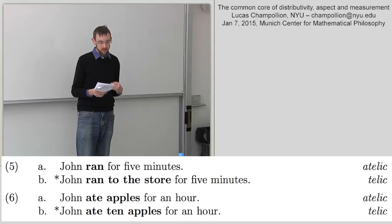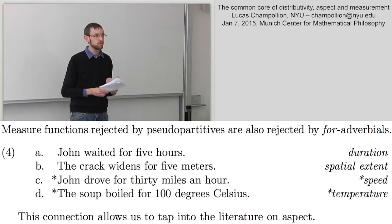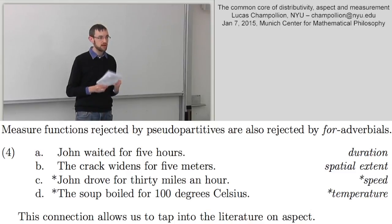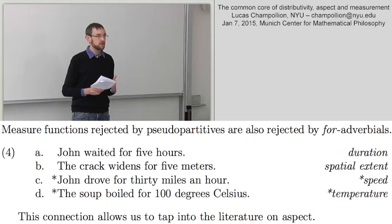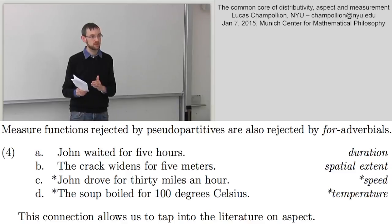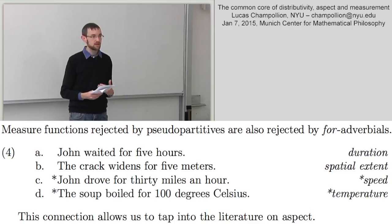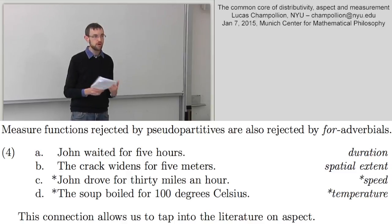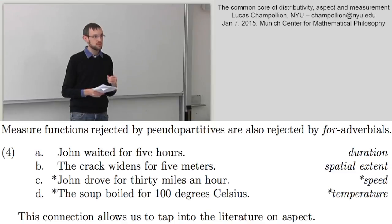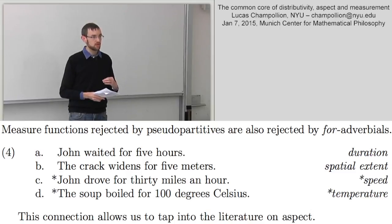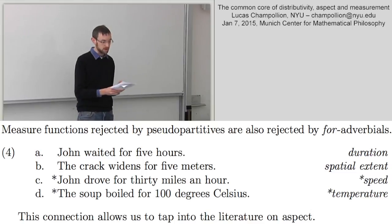For-adverbials are compatible with the same class of measure functions as pseudo-partitives. We find temporal for-adverbials ('run for three hours'), spatial for-adverbials ('the crack widened for five meters'), but not speed or temperature for-adverbials. You cannot say 'John drove for 30 miles an hour' or 'the soup boiled for 100 degrees Celsius.' So whatever account we give of for-adverbials may explain the restriction on measure functions, and then we can carry that back to pseudo-partitives.